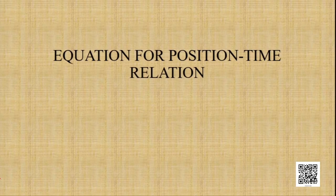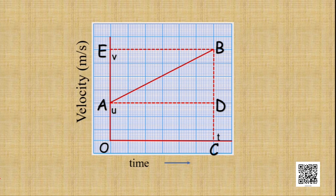The first equation of motion states that the final velocity equals the initial velocity plus the product of acceleration and time. Now we will go for another equation — the equation for the position-time relation. For this, we will consider the same graph. The object has traveled a distance S in time T under uniform acceleration A.